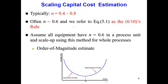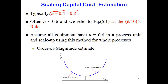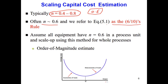n is usually between 0.4 and 0.8, and a value of 0.6 is a very typical value used in many industries and many places. When we use 0.6, it is called the six-tenths rule, or the 0.6 rule.